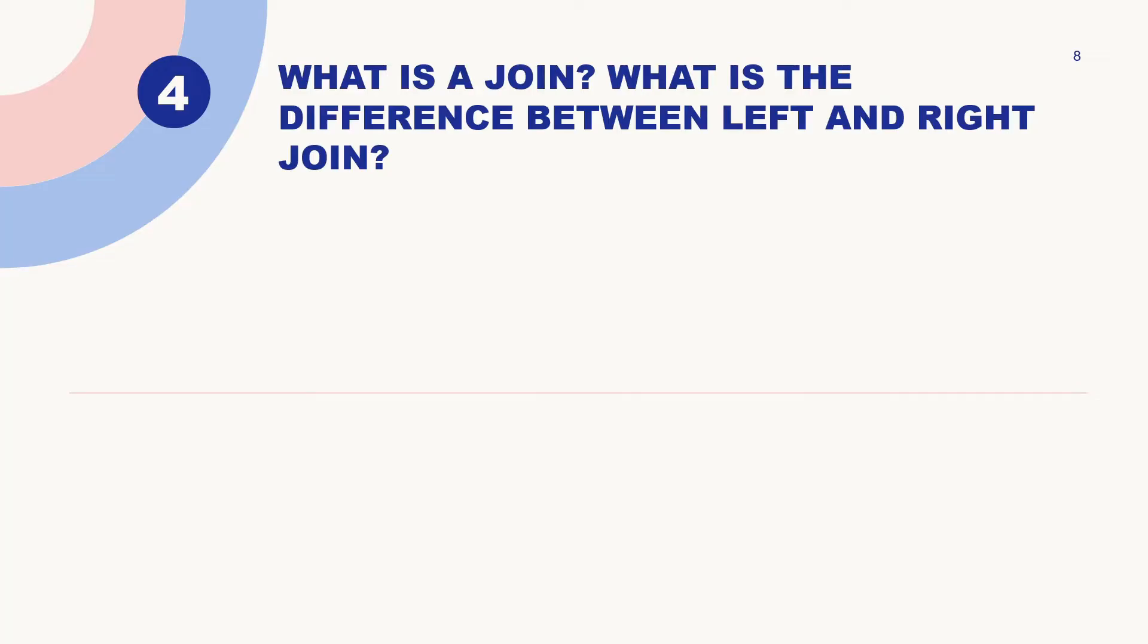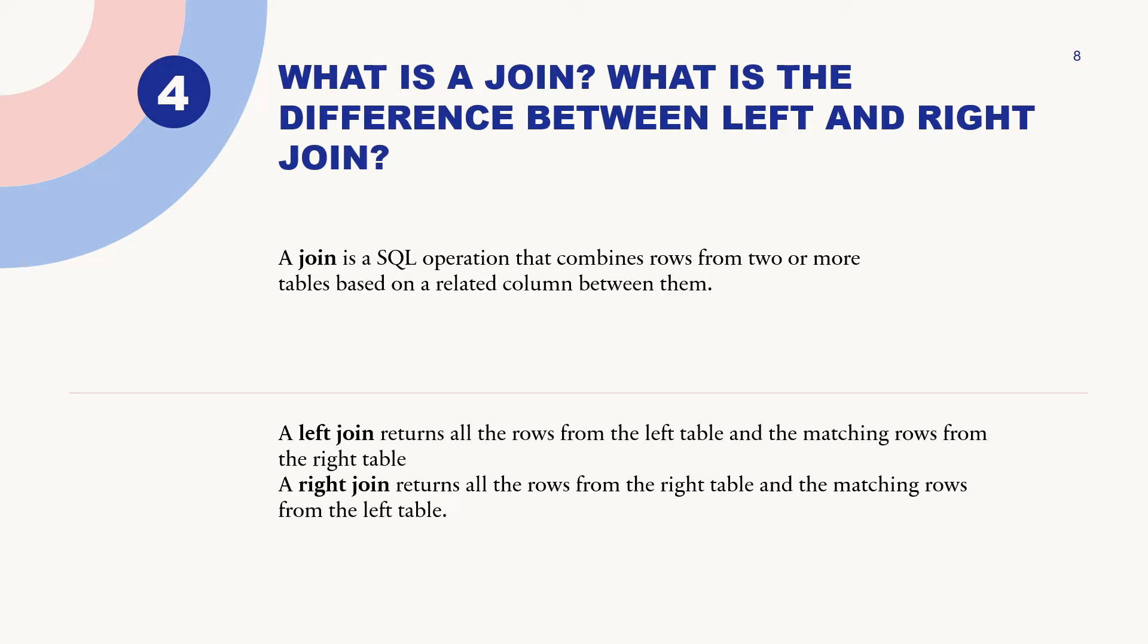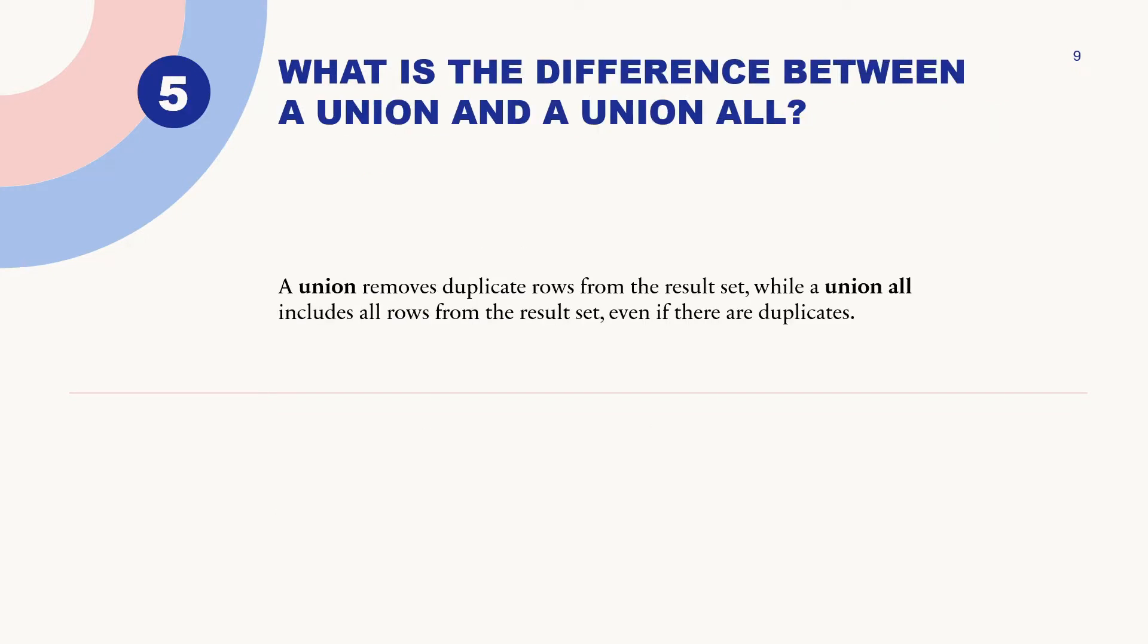Next question: what is a join and what is the difference between left and right join? A join is an SQL operation that combines rows from two or multiple tables based on a related column between them. Left join returns all the rows from the left table and matching rows from the right table. Right join returns all the rows from the right table and matching rows from the left table. We will have more hands-on in our practical session.